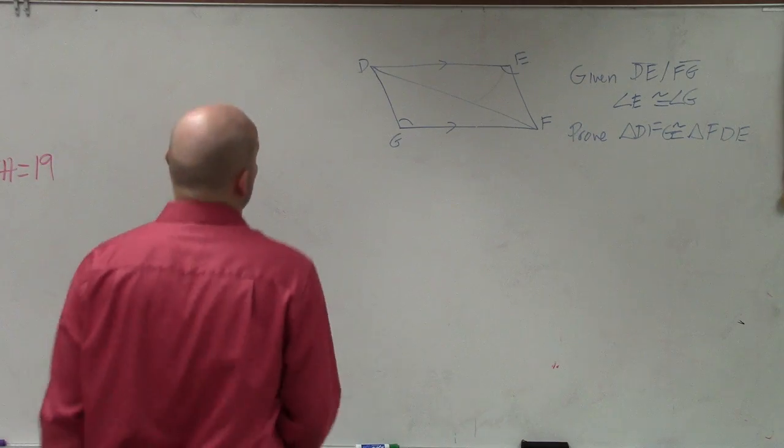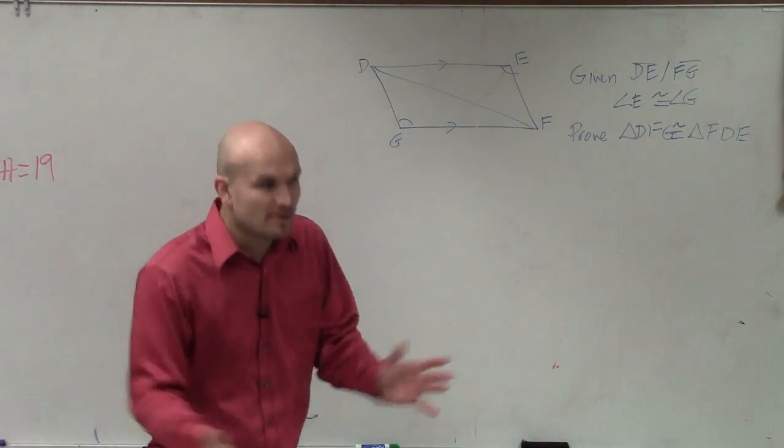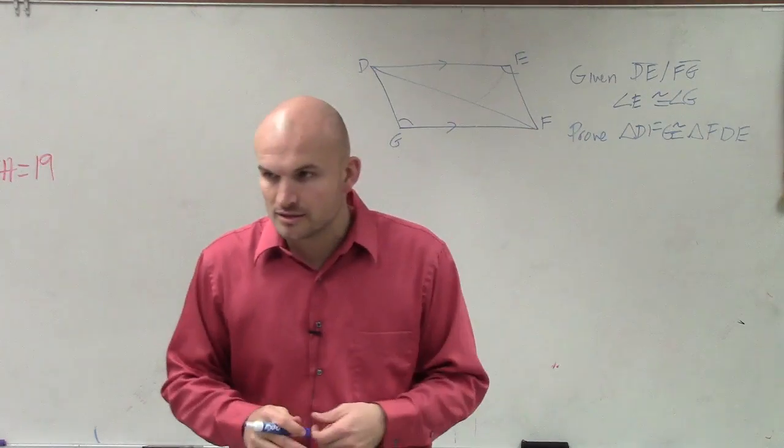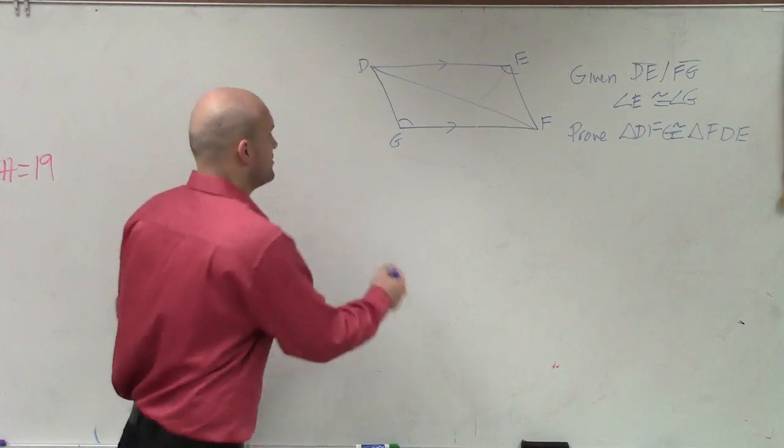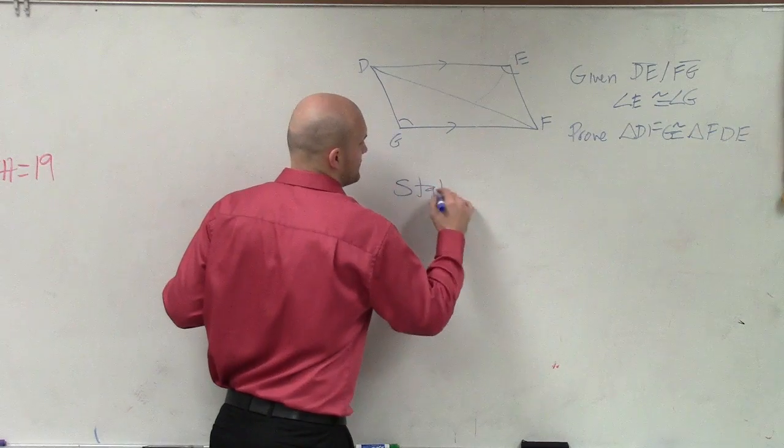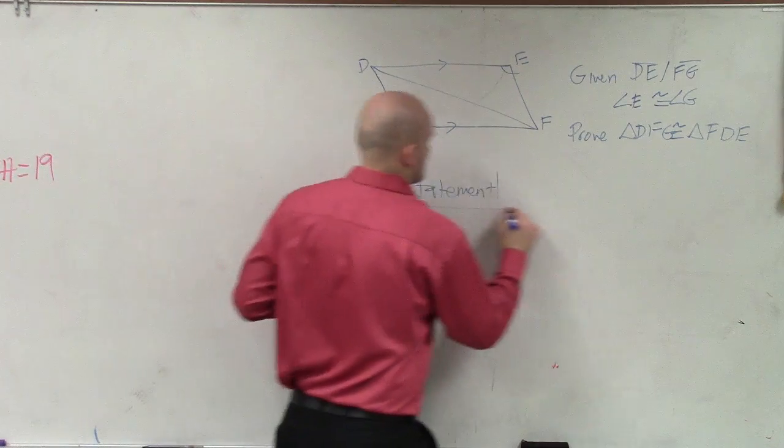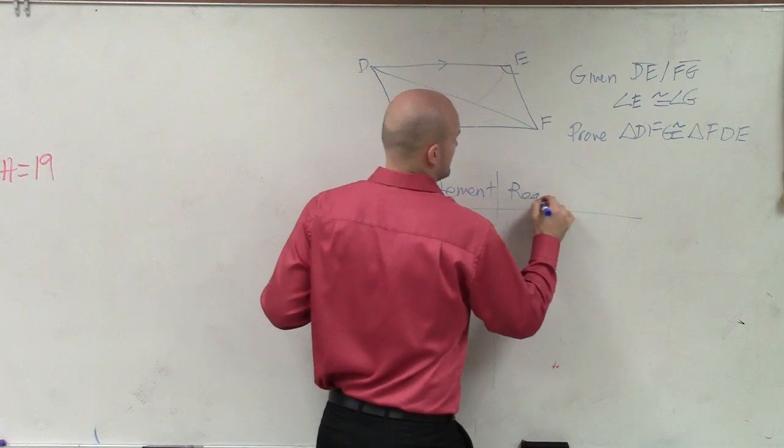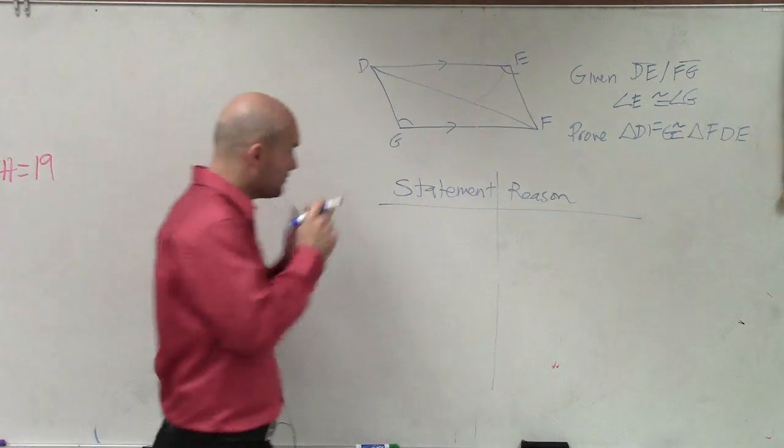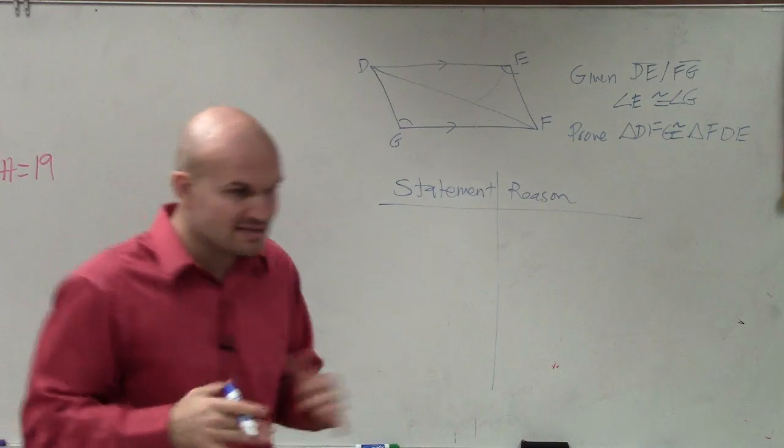In this one, ladies and gentlemen, what they're asking us to do is to write a proof. So again, if we're going to be writing a proof, we're going to be using our two-column proofs. So the first thing we always want to have is our statement and then our reason.